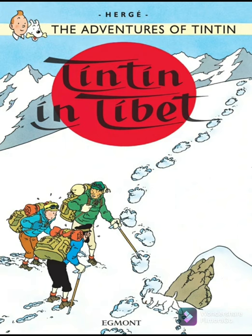The next morning, he reads in the newspaper that Chang was indeed aboard the plane that crashed in Tibet. Believing that his dream was a telepathic vision, Tintin travels to Kathmandu with his pet dog Snowy, followed by a skeptical Captain Haddock. They meet with a Sherpa named Thaki, accompanied by some porters.